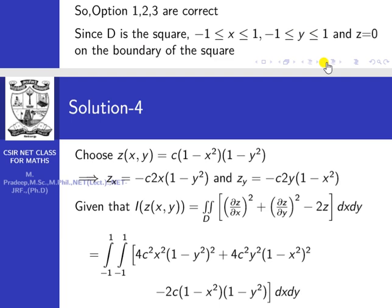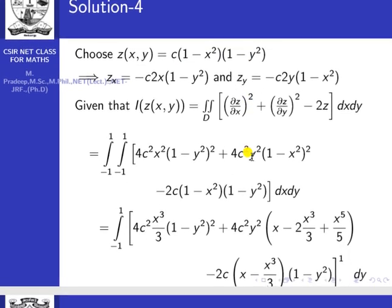We assume the approximate solution z(x,y) = c(1 − x²)(1 − y²). This satisfies z = 0 on the boundary: at x = ±1, (1 − x²) = 0; at y = ±1, (1 − y²) = 0. Now differentiating: ∂z/∂x = −2cx(1 − y²) and ∂z/∂y = −2cy(1 − x²).